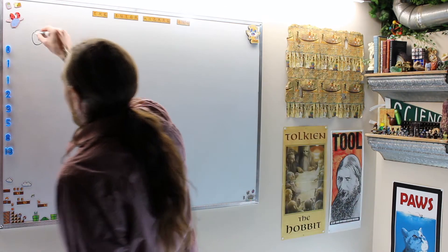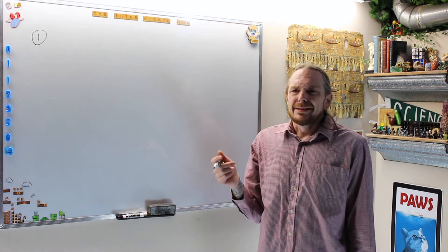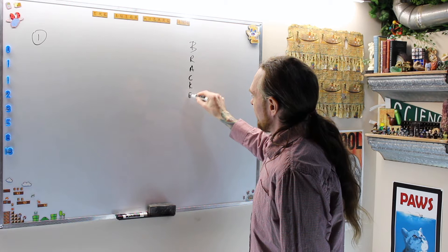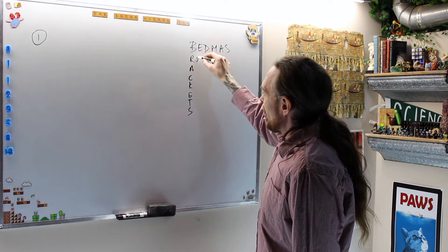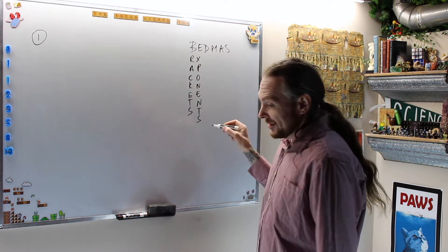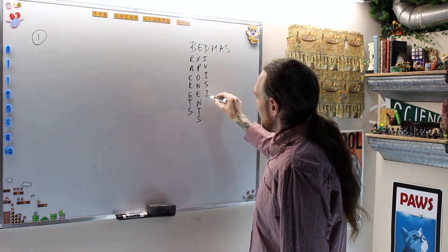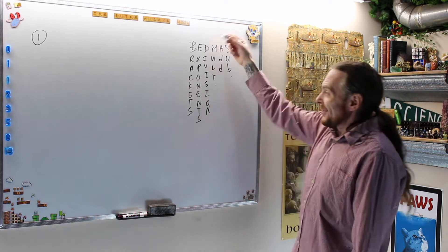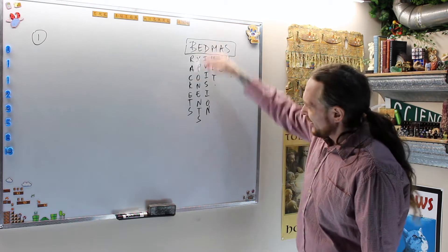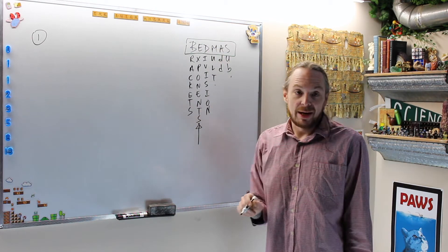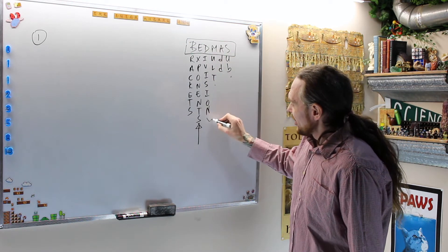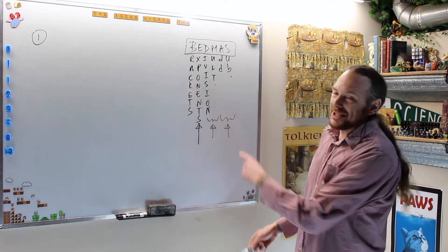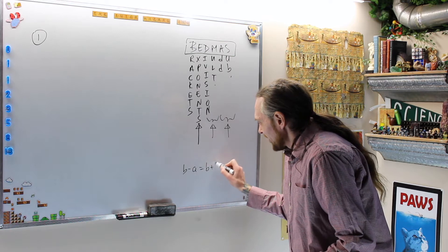The first thing we're going to do is remind you what exponentiation actually means — BEDMAS. Why does BEDMAS work the way it works? BEDMAS: Brackets, Exponents, Division, Multiplication, Addition, Subtraction. I don't really like mnemonics, but why does the mnemonic work? Our monkey brain only knows one binary operation, which is called addition.